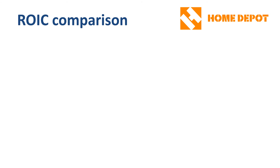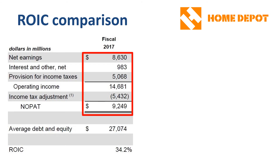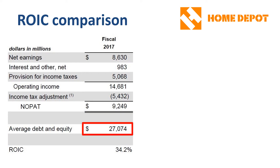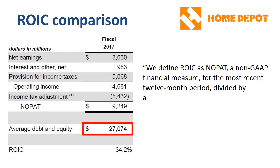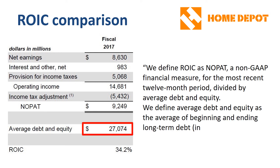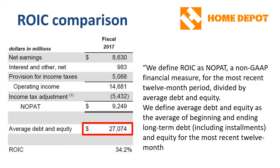Home Depot ROIC: Home Depot uses NOPAT in the numerator. In the denominator is average debt and equity. It's useful to always read the narrative of how ROIC is defined by the company. In the case of Home Depot, ROIC is defined as NOPAT — a non-GAAP financial measure — for the most recent 12-month period, divided by average debt and equity. They define average debt and equity as the average of beginning and ending long-term debt, including installments, and equity for the most recent 12-month period. So in Home Depot's definition, compared to 3M's, short-term debt — on average $1.1 billion — is excluded from the denominator, making the resulting ROIC slightly higher.